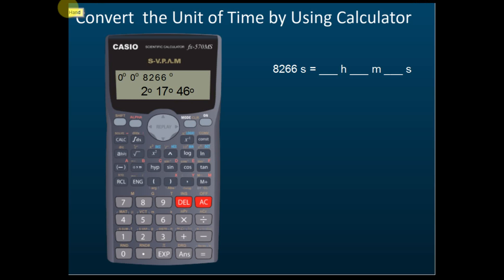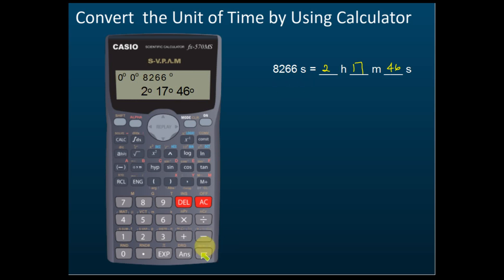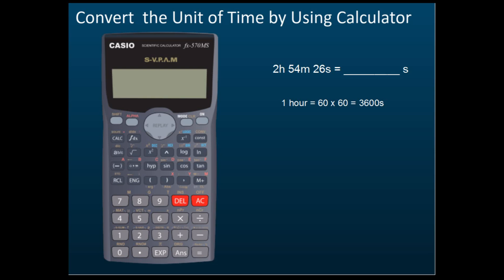So the answer is 2 hours, 17 minutes, 46 seconds. That is how we use the calculator to convert time: key in 0 degrees, 0 minutes, 8266 seconds, press equal, and it gives you 2 hours, 17 minutes, 46 seconds.